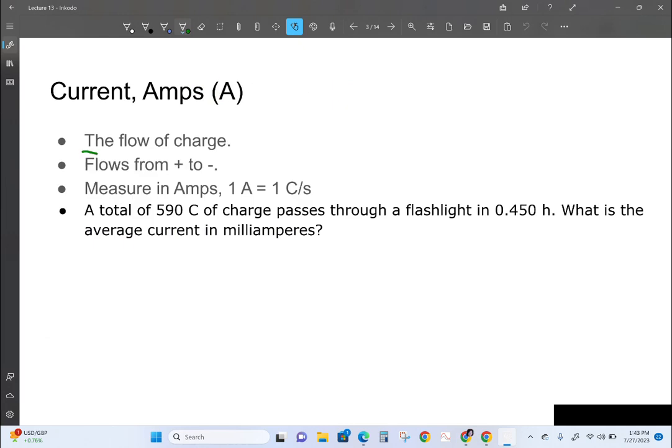Voltage is essential. We have to have some kind of potential difference in the circuit to cause the electrons to start to flow. That flow of charge is called the current, measured in amps. An amp is the number of coulombs per second. For example, if I knew there were 590 coulombs of charge passing through a flashlight in 0.450 hours, I could figure out the current. It's charge divided by time, and the time is in seconds. One hour has 3,600 seconds.